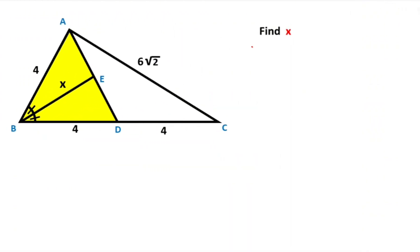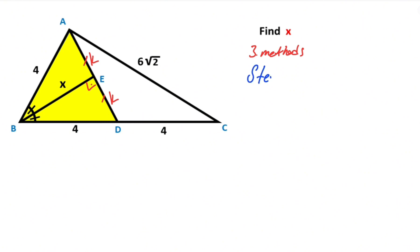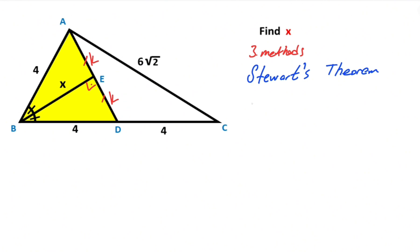Now we will calculate the value of x using the third method. You know that here is 90 degrees and these two parts are equal. Let's call these two equal parts k. Therefore for this middle triangle, if we apply Stewart's theorem: the square of this length (2k) squared must equal the square of this length times this part — so 4 squared times 4 — plus the square of this length times this part — so (6 root 2) squared times 4 — over the sum of these two parts, 4 plus 4, minus the product of these two parts, 4 times 4.